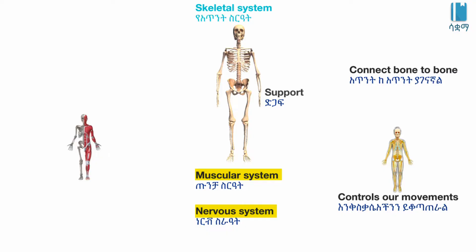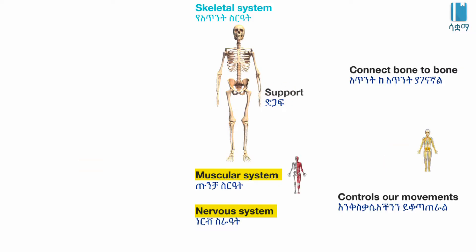Our skeletal system and nervous system — the nervous system controls our movement. Ligaments connect bone to bone.